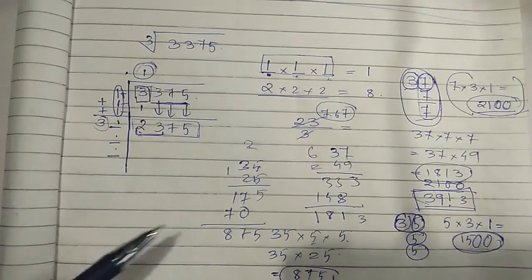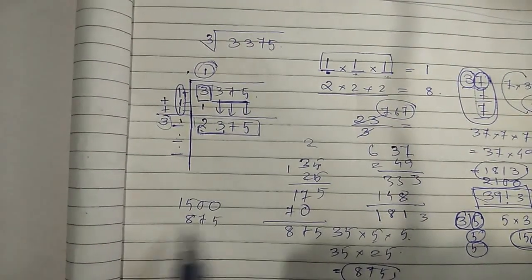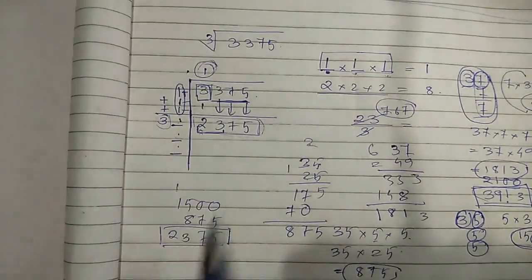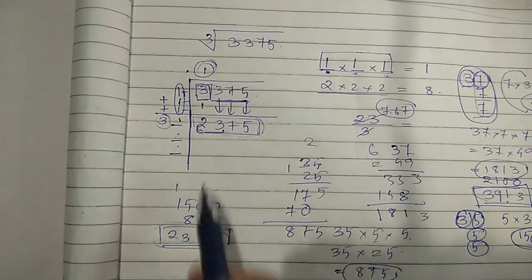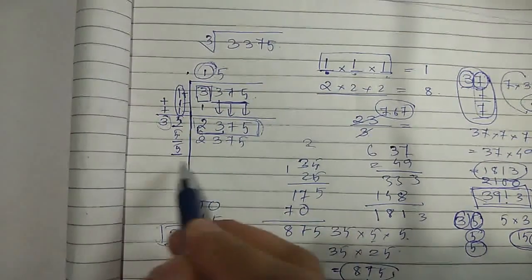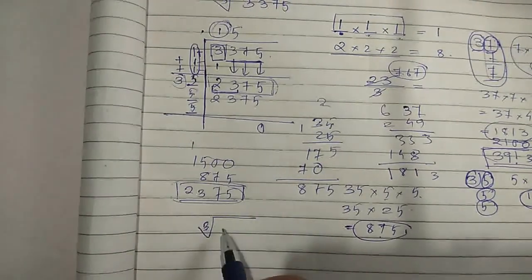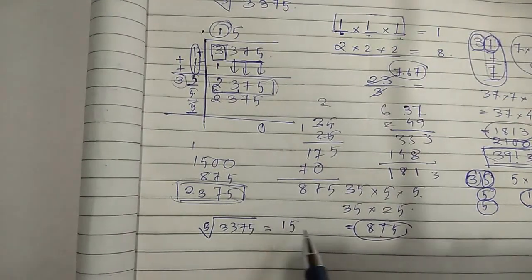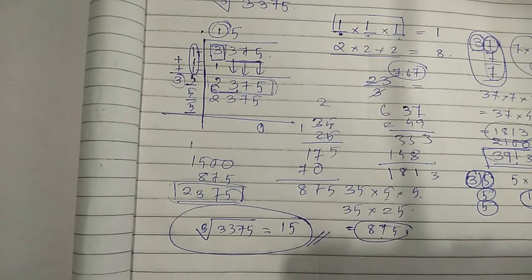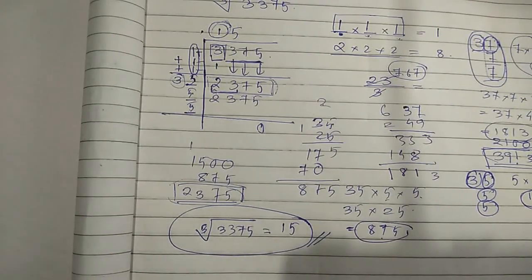Adding the two steps: 1500 + 875 = 2375, which matches exactly. Therefore we place 5 here, and the remainder is zero. We conclude that the cube root of 3375 equals 15. If you have any doubts, please comment, and I'll be uploading more exercises on cube roots. Thank you.